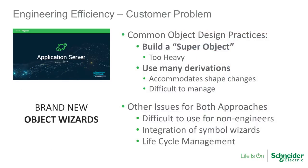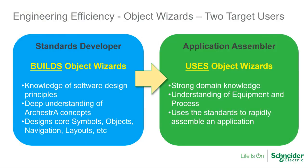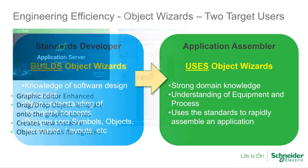When modeling their plant, customers sometimes struggle to create a flexible template which accurately reflects their wide array of equipment, yet also accommodates future growth and changes. Application Server 2017 solves this by introducing Object Wizards. Built by standards developers and used by application assemblers, Object Wizards allow customers to codify their equipment capabilities, including attributes, operational logic, and graphics in a single, flexible, highly performant template. Best of all, the resulting template provides maintenance users an easy, wizard-based workflow to create or update equipment instances.